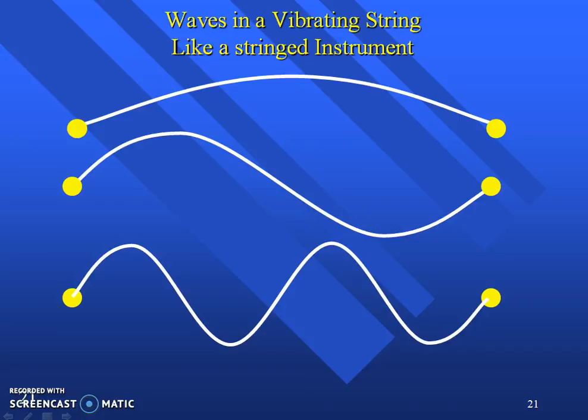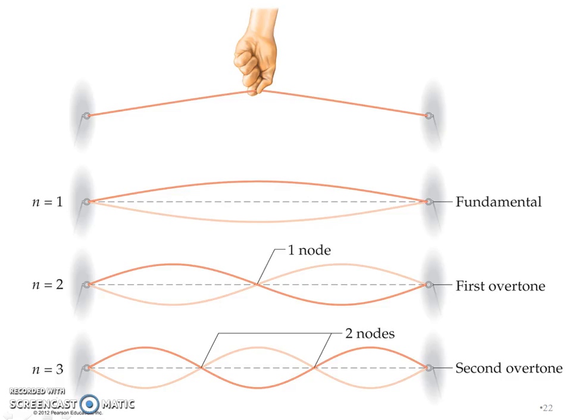It waves in a vibrating string like a stringed instrument. If you pluck it, it's going to start moving. It depends on how hard you pluck or how high up you pluck it. It's going to give you different fundamental first overtone or second overtone ways of that wave. If we have energy level one, it's just going to go back and forth. Energy level two, you're going to have more things going on. Energy three, you're going to have more things going on.